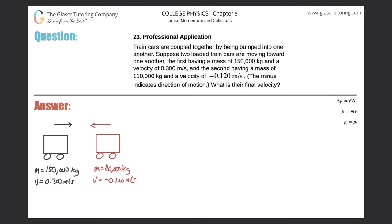Number 23, professional application. Train cars are coupled together by being bumped into one another. Suppose two loaded train cars are moving toward one another, the first having a mass of 150,000 kilograms and a velocity of 0.3 meters per second, and the second having a mass of 110,000 kilograms and a velocity of negative 0.12 meters per second. The minus indicates direction of motion. What is their final velocity?